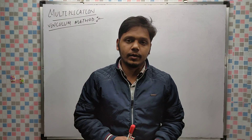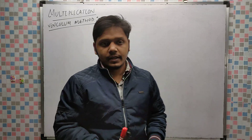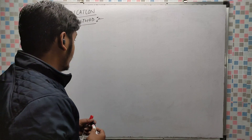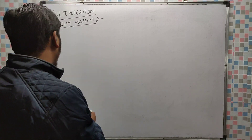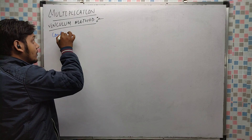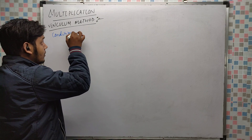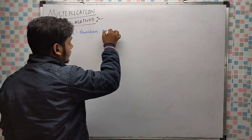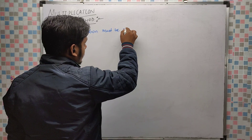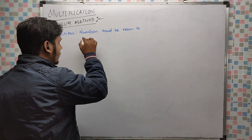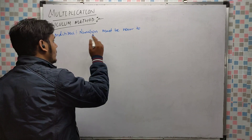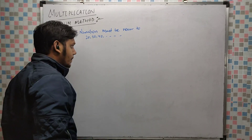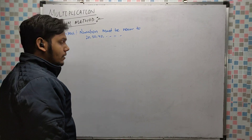Hello students, in this video we are going to learn about multiplication by using the vinculum method. Keep in mind the condition: numbers are to be near to values like 20, 30, 40, and so on. There are two terms involved.